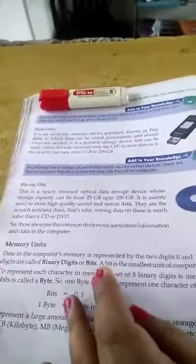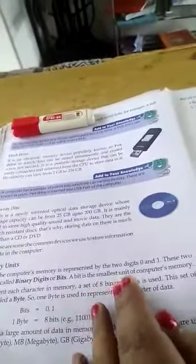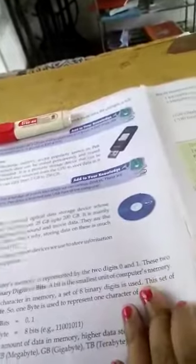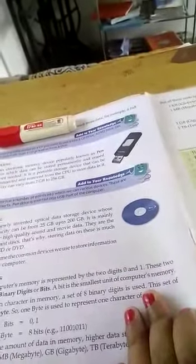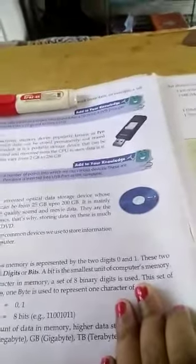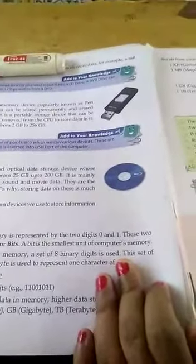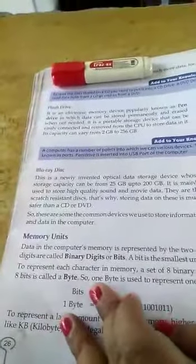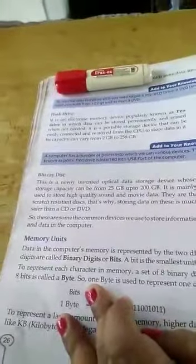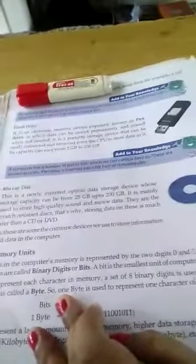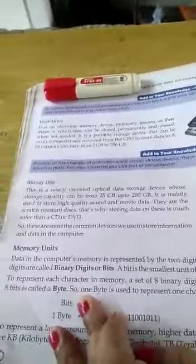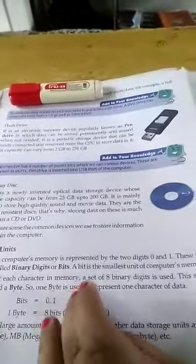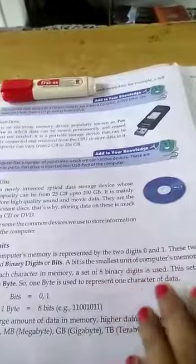To represent each character in memory, a set of 8 binary digits is used. This set of 8 bits is called a byte. So, 1 byte is used to represent 1 character of data.